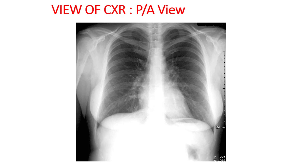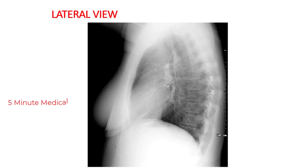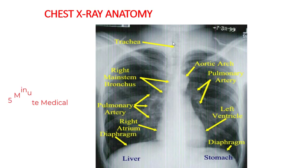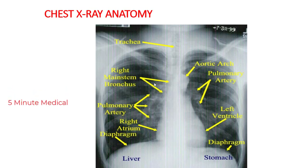First of all, this is the normal chest X-ray posterior-anterior view, and this is the lateral view chest X-ray. This is the chest X-ray anatomy. The structures we usually read in a chest X-ray: first, the trachea — is it centrally placed or not — then the right main stem bronchus and the aortic arch.